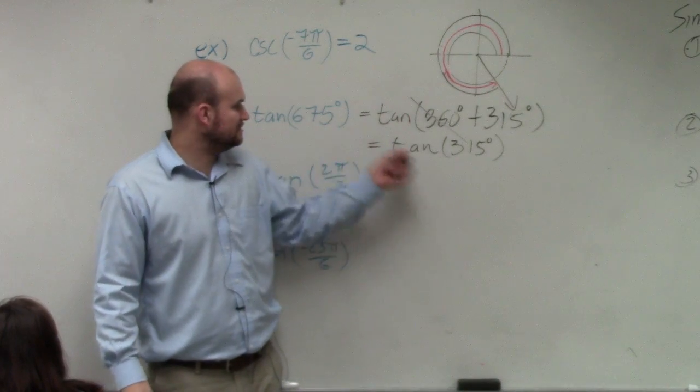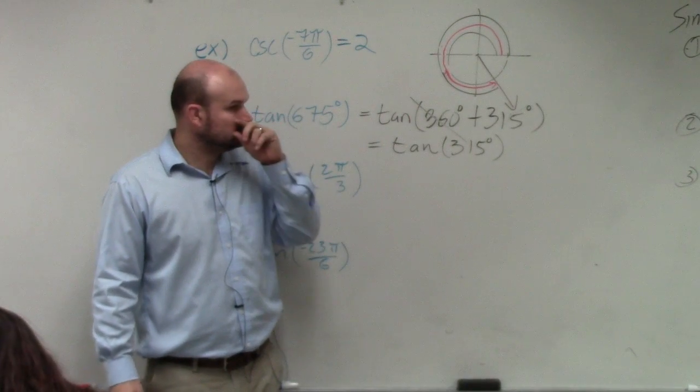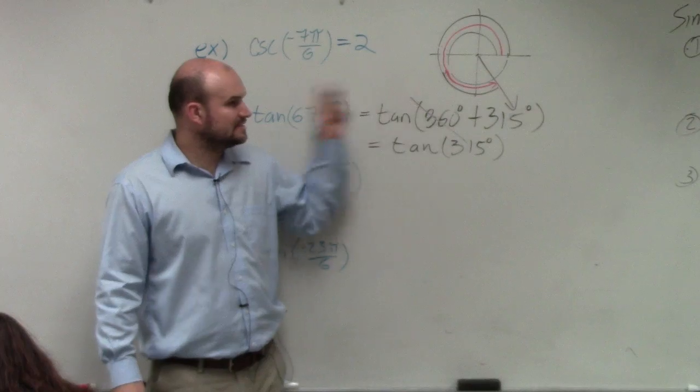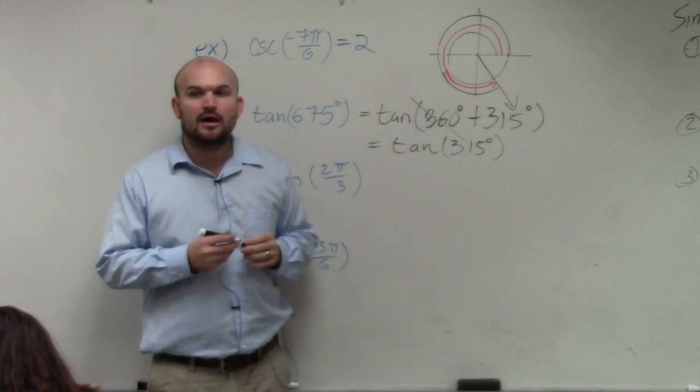So tangent of 375 is equivalent to the tangent of 315 degrees. These are coterminal angles. These are coterminal angles. All right.